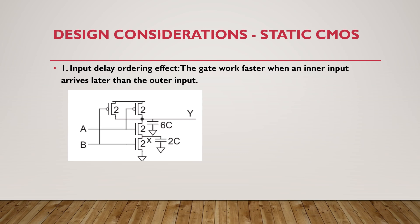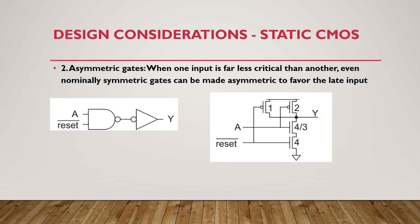The next design consideration is asymmetric gates. If any one of the inputs is far less critical than the other, we can convert our symmetrical gate into an asymmetrical gate to favor that particular input. For example, in this circuit with two inputs A and B, input A is the critical one because A will keep on changing, but the reset will be used only once in a while. So the reset is always less critical than input A.